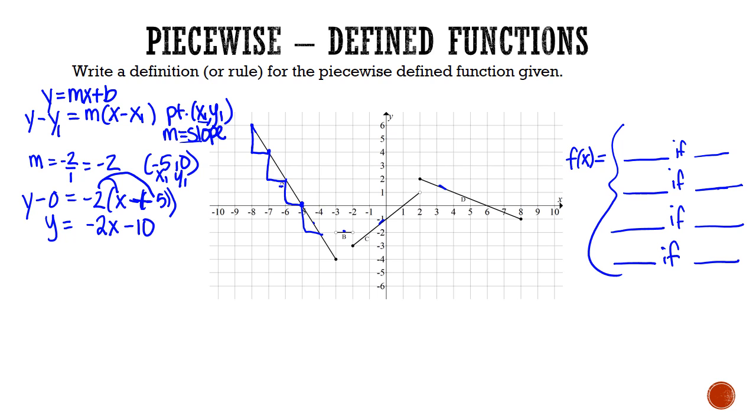So the first piece, this part A, the formula for it is negative 2x minus 10. And again, notice I don't write y equals here because I already have this f of x written here. So it's negative 2x minus 10. And the domain of that is from x equals negative 8 to x equals negative 3. And we're including both of those. So we're going to say less than or equal to negative 8 and less than or equal to negative 3.